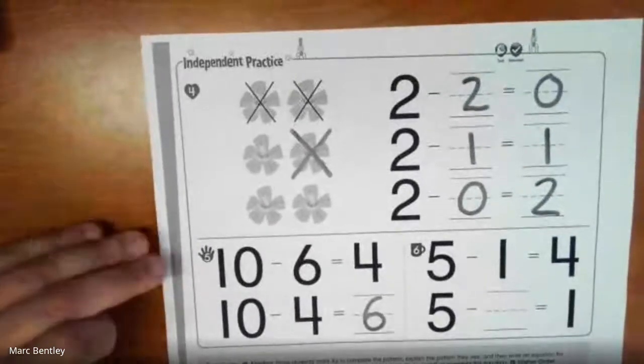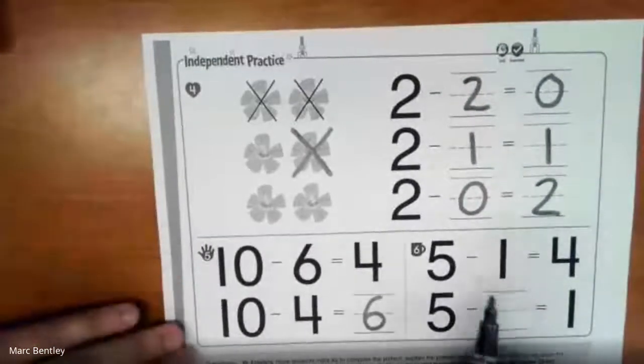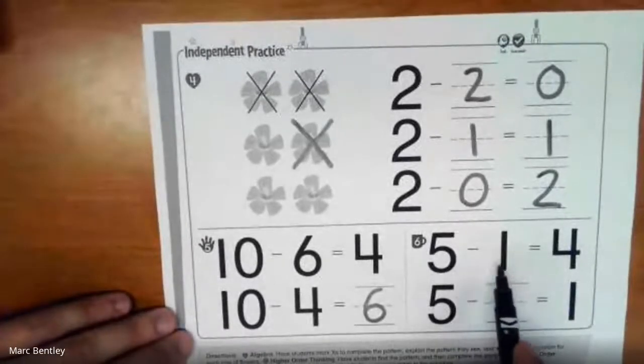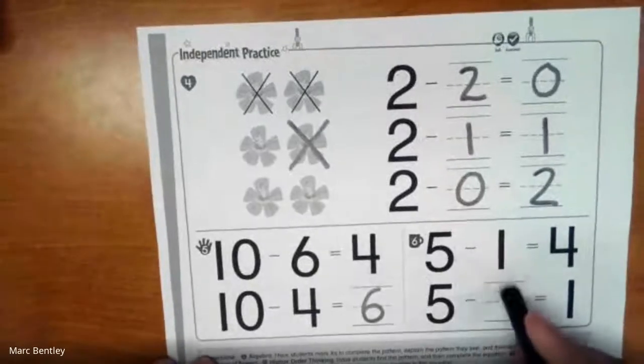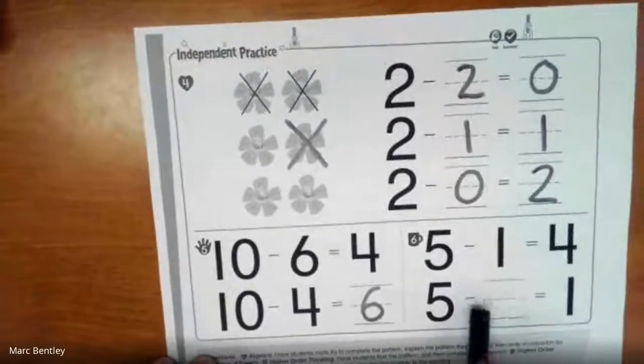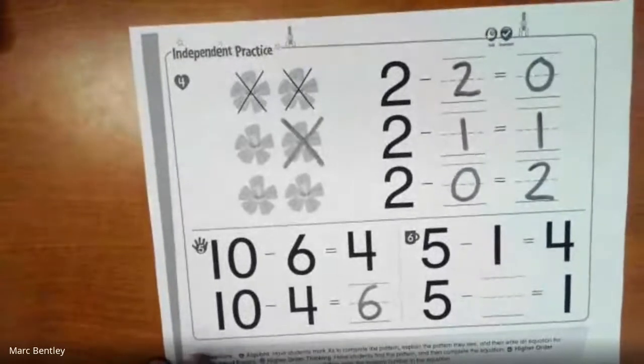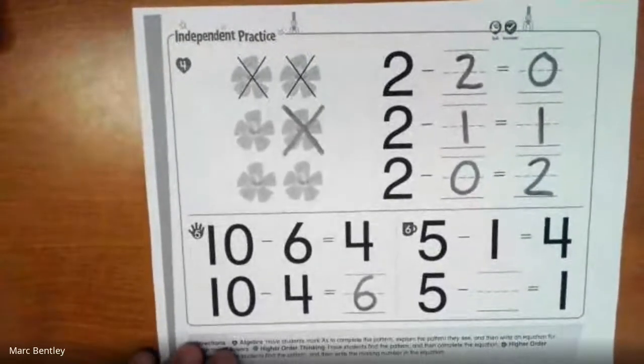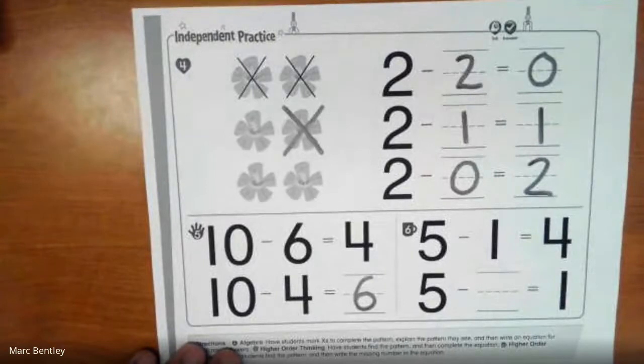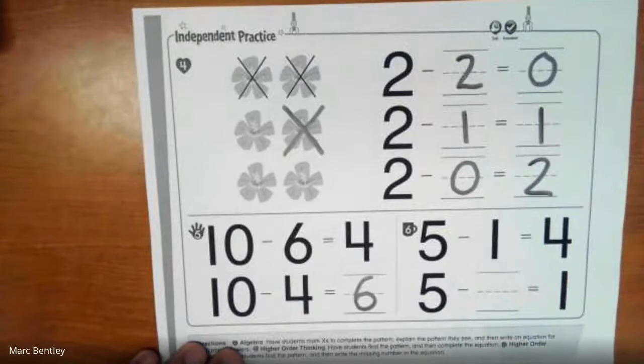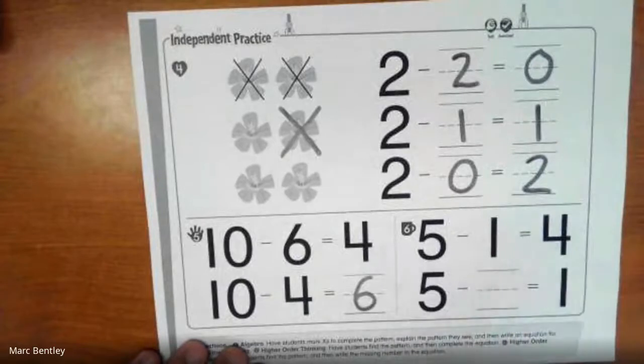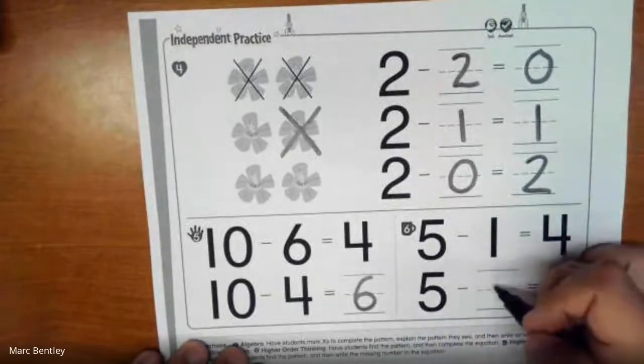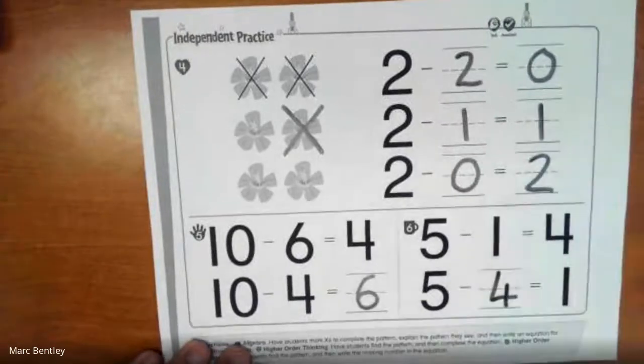Okay, moving across. This one, it already tells us that 5 minus 1 equals 4. And we're asked to find what goes in here. So 5 minus blank equals 1. So if you said 4, then you're right. If 5 minus 1 equals 4, then that must mean that 5 minus 4 equals 1.